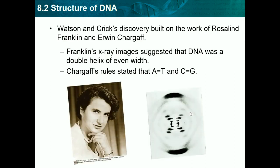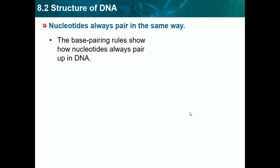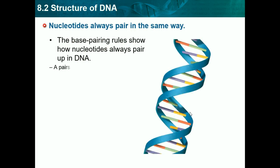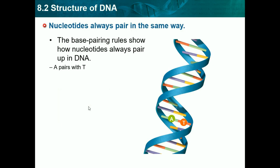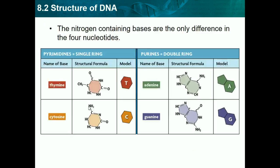Watson and Crick are thought of as discovering the double helix shape, but it was actually Franklin — they got all the credit because they were men and she was a female. The base pairing rule shows how nucleotides always pair up: A to T and C to G. An easy way to remember is that C and G both have a curved side, so they always pair together. Because a pyrimidine — a single ring — pairs with a purine — a double ring — the helix always has a uniform width.